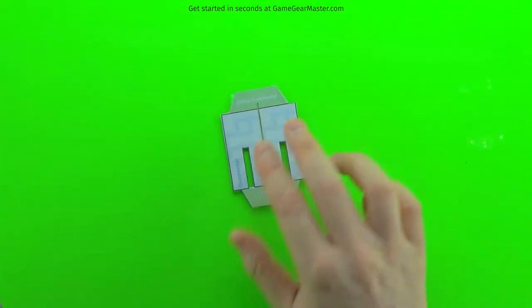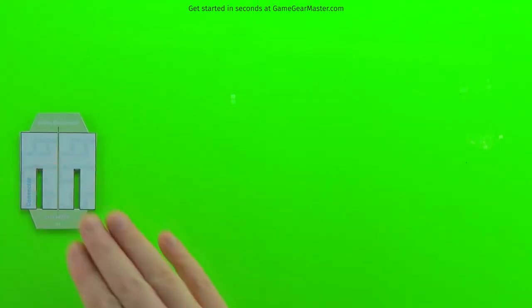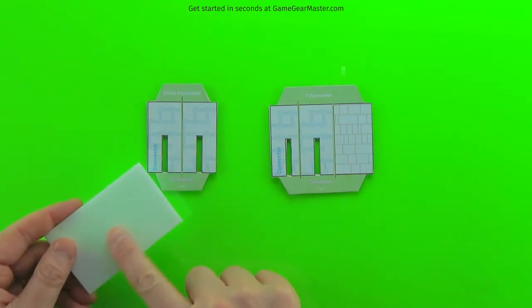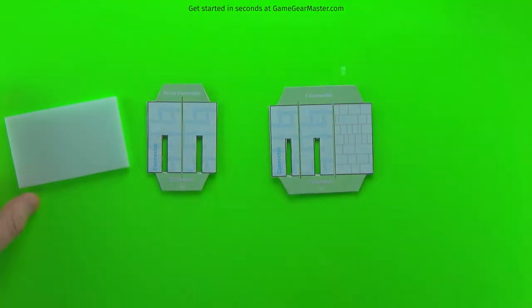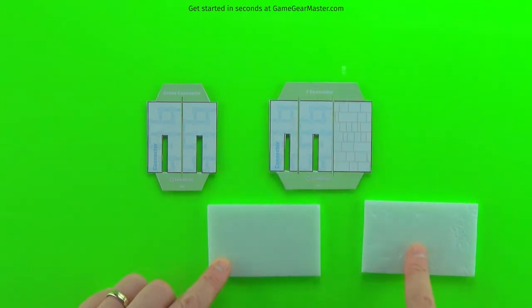You'll notice on the connector templates that there's these blue areas, and then there's also areas that look like the exterior of the walls. That's to show you the bits that need texture and that don't need texture. The blue bits are the actual connector, and the brown brick bits are the exterior facades that make them look nice.